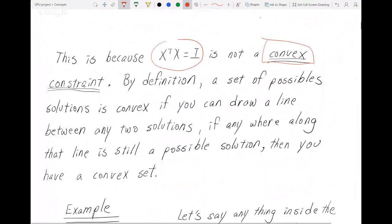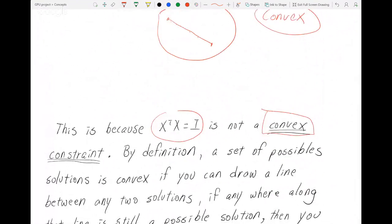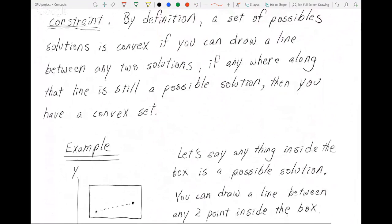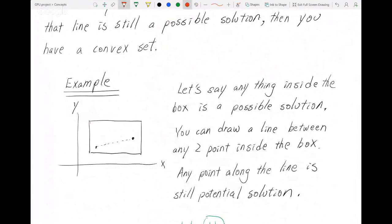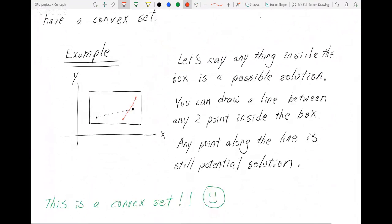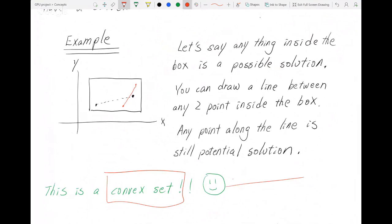I'm going to assume most people watching already know the definition of convexity, but just in case, here's an example. Everything inside this rectangle is a potential solution. No matter what two points you pick, when you draw a line, it's always going to be within the rectangle. So this is a convex set. The universal symbol for a convex set is a smiley face, because convexity really makes things easier.